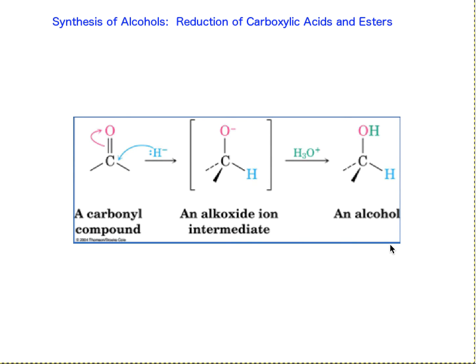In our last video, we showed how to synthesize alcohols through reduction of ketones and aldehydes. The reducing agents we used were lithium aluminum hydride and sodium borohydride. It was a pretty straightforward reaction, with a hydride attacking a carbonyl, electrons coming out to form a negatively charged alkoxide intermediate. That alkoxide intermediate can become protonated to give us our final alcohol.